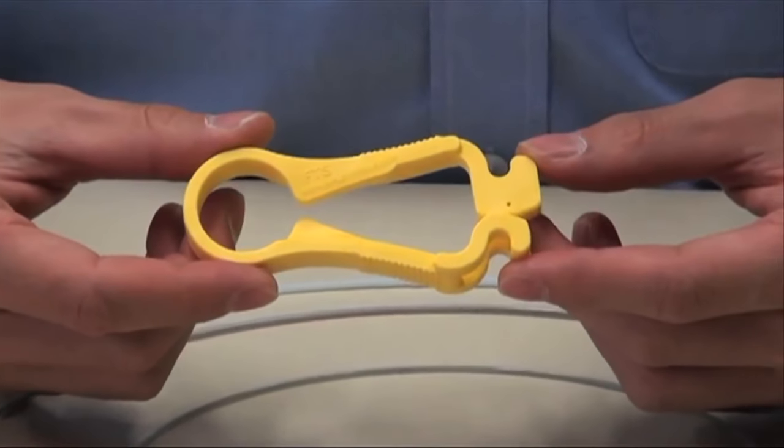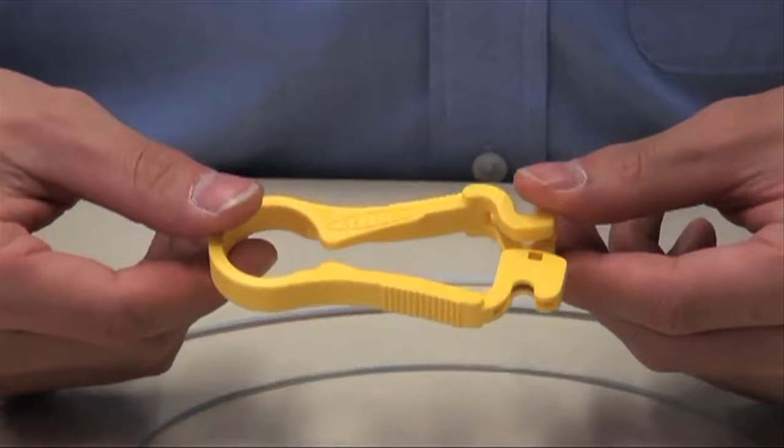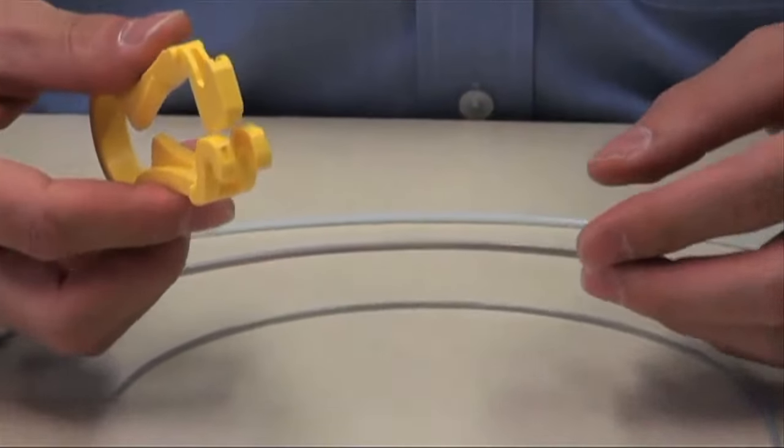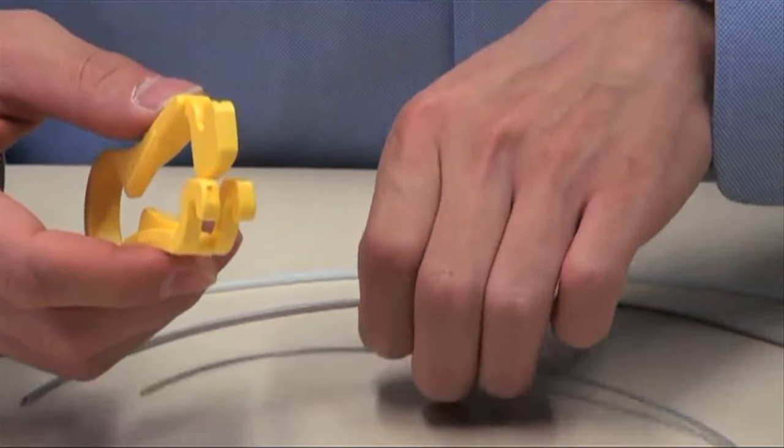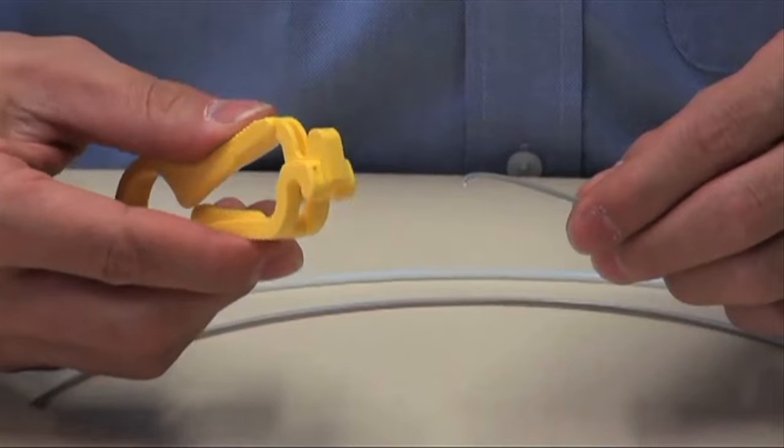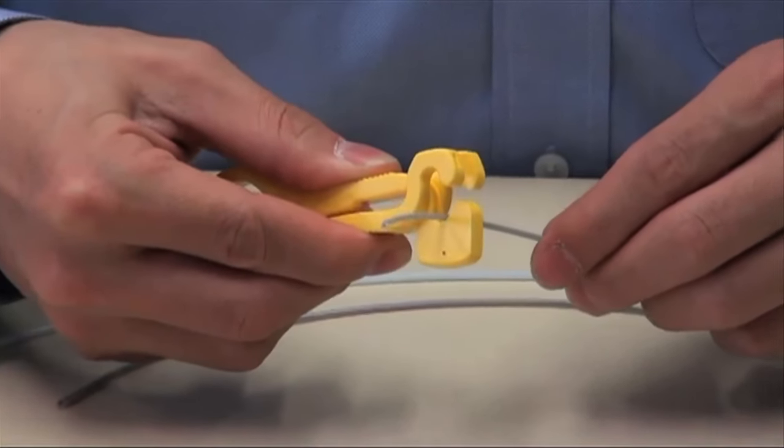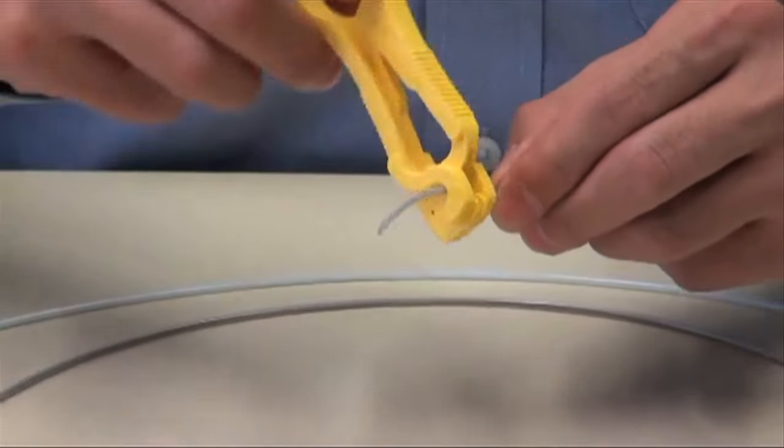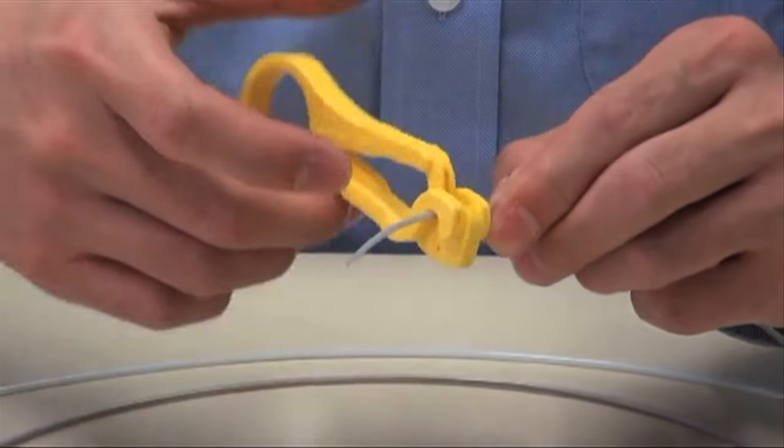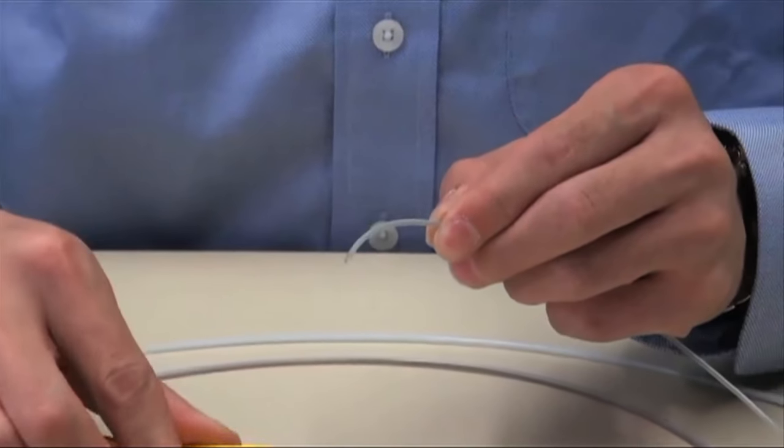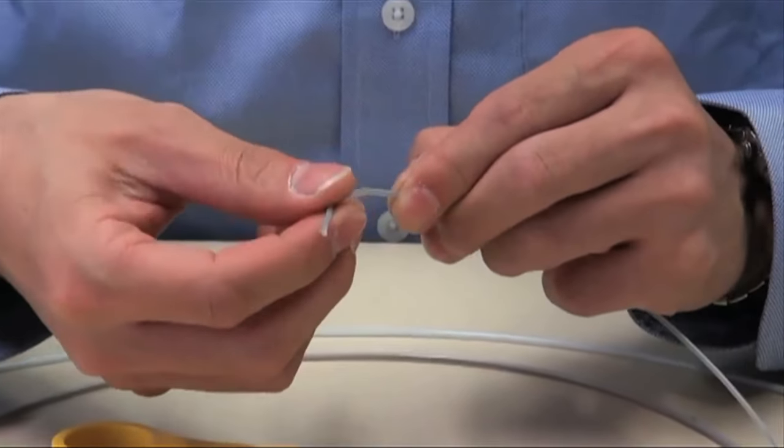The Ripley FTS fiber buffer tube scorer is a precise one-step way to score a buffer tube. Its unique design allows you to easily score buffer tube sizes ranging from 1.6 millimeters to 6.0 millimeters, eliminating multiple tools. It has a factory-fixed hardened carbon steel blade that requires no blade adjustment, and the body is made of strong, resilient yellow acetyl polymer.